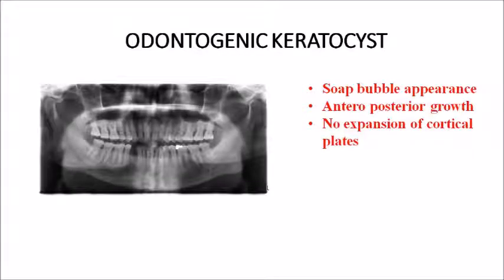OKC (odontogenic keratocyst) has a soap bubble appearance. You can see this in the 43-44 region and note that the tooth has exfoliated. The growth of OKC is in the anterior-posterior direction. There will be no buccal cortical plate expansion because the growth is in the anterior-posterior direction without expansion of the cortical plates.